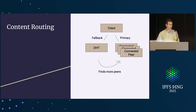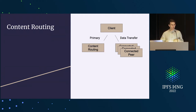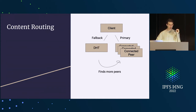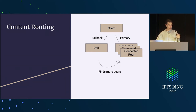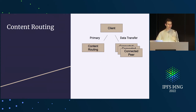When your current set of connections doesn't work, you fall back to a DHT because it's more expensive — it takes longer than those immediate single-hop queries to your current swarm. The reason it's structured this way is an artifact of the DHT being really expensive. If it's going to take seconds, which is what it took when it became a fallback, that's not something you want to do for every CID.